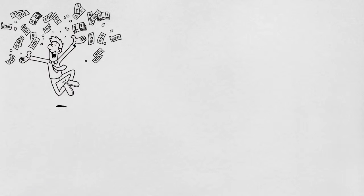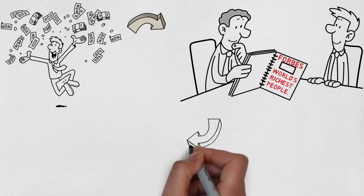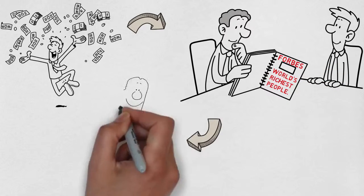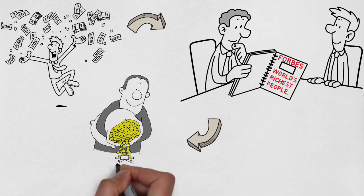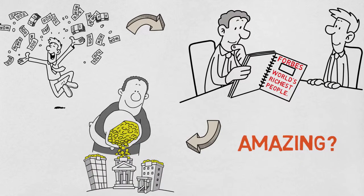Did you know that the richest people in the world are business owners? In the Forbes 100 list of the world's richest people, 100% of them are business owners, and all of them have enough money to provide for countless of their succeeding generations. Isn't that amazing?